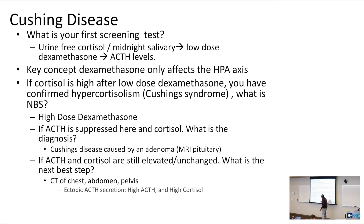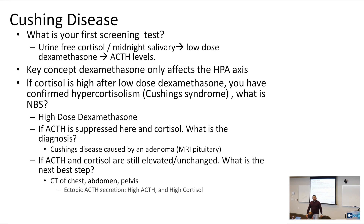When thinking about ectopic ACTH secretion, it is not going to be suppressed by high-dose dexamethasone, because high-dose dexamethasone only affects the HPA axis. Ectopic ACTH secretion is going to be related to high ACTH levels and high cortisol levels. Small cell lung cancer causes you to have ectopic ACTH secretion.